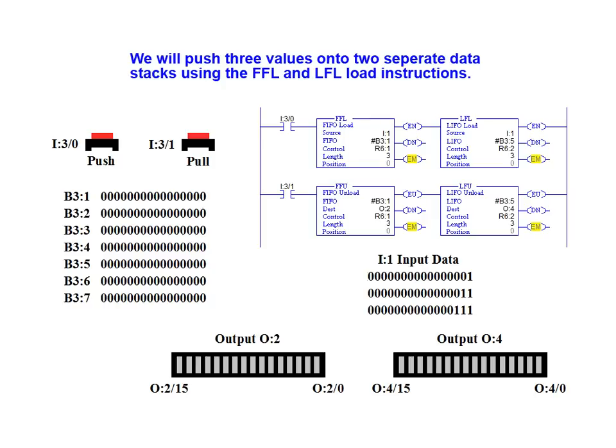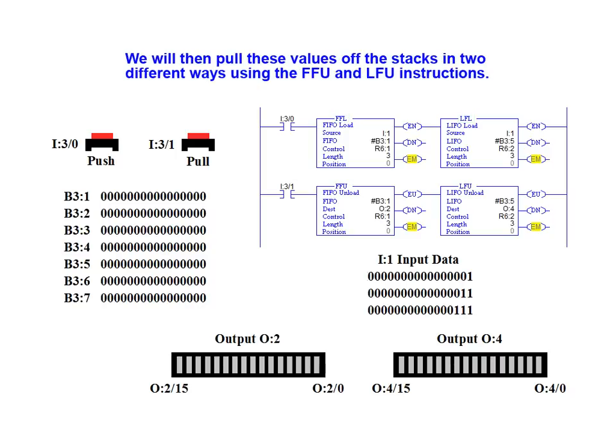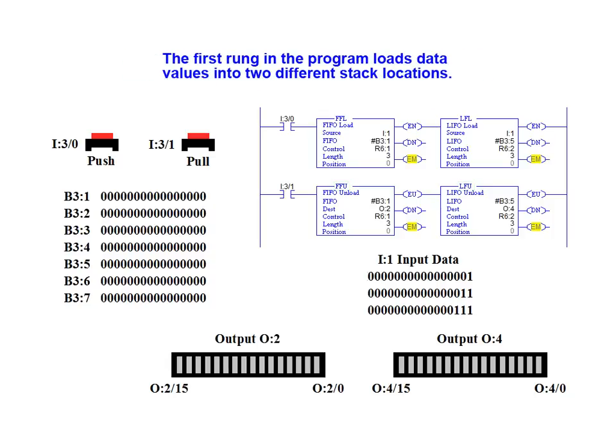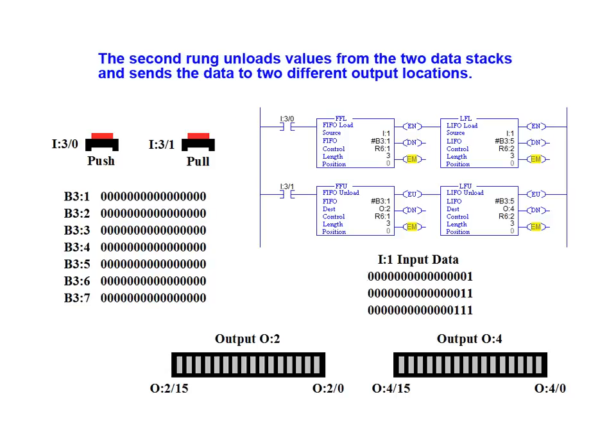We will push three values onto two separate data stacks using the FFL and LFL load instructions. We will then pull these three values off the stacks in two different ways using the FFU and LFU unload instructions. The first rung in the program loads data values into two different stack locations. The second rung unloads values from the two data stacks and sends the data to two different output locations.